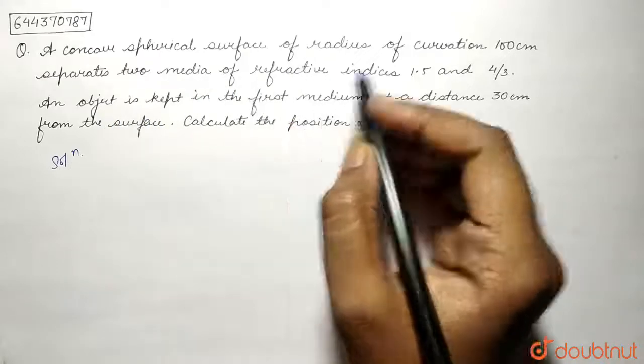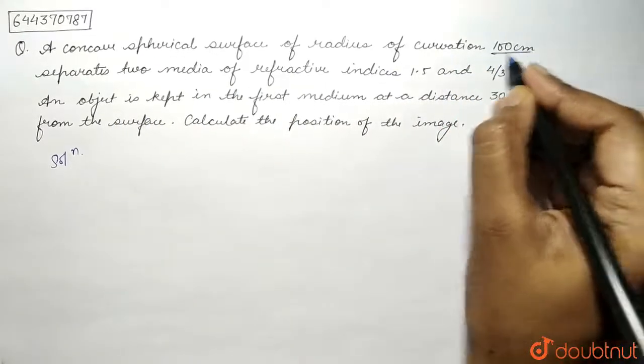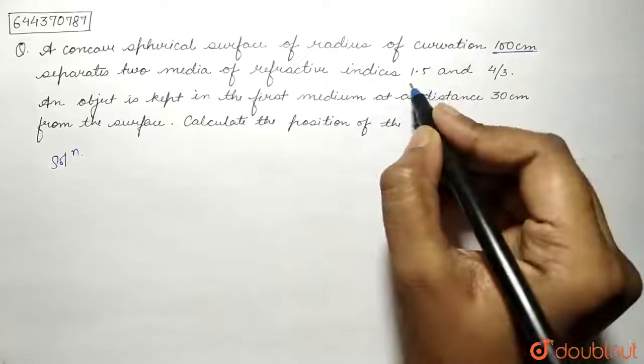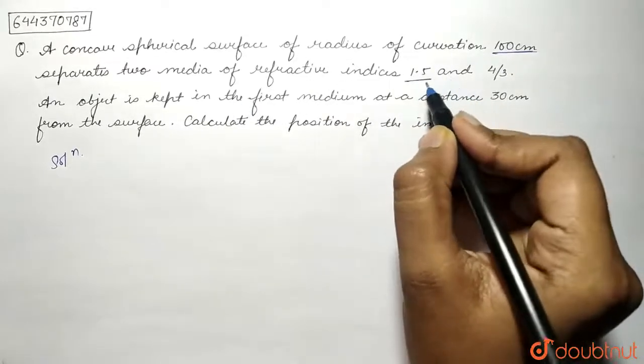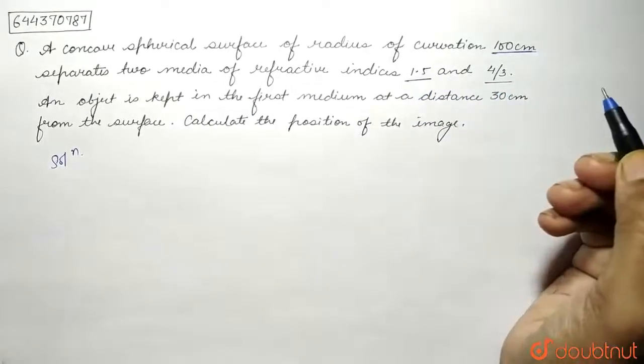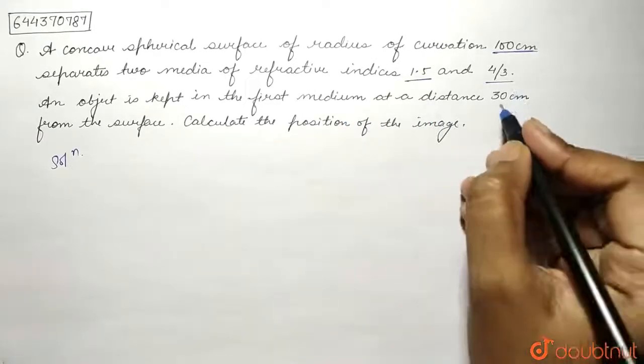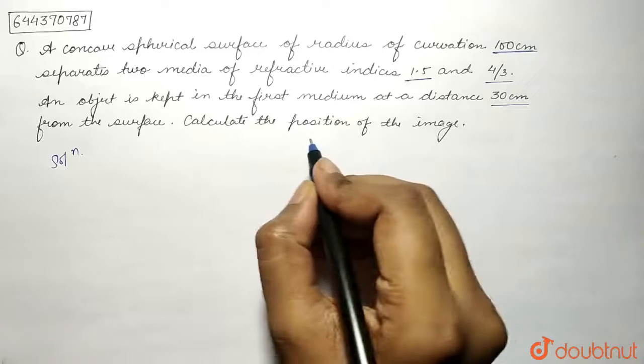concave spherical surface of radius of curvature 100 centimeters separates two media of refractive indices 1.5 and 4/3. An object is kept in the first medium at a distance 30 centimeters from the surface. Calculate the position of the image.